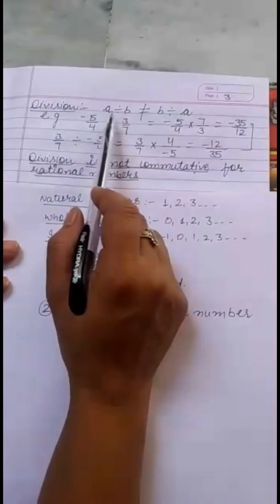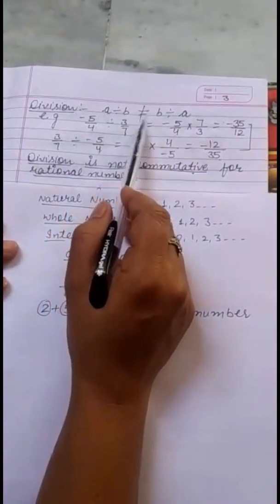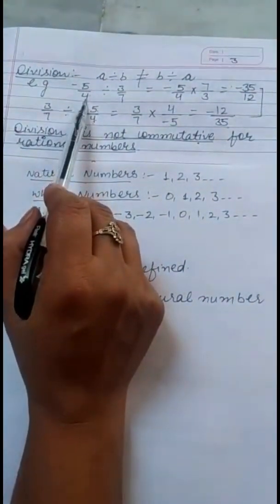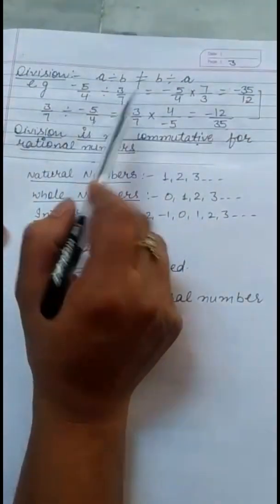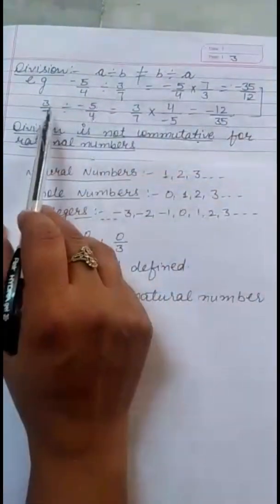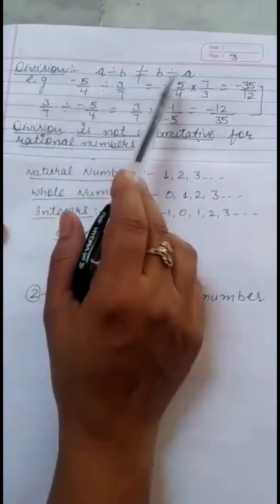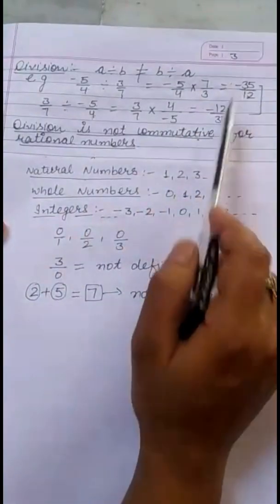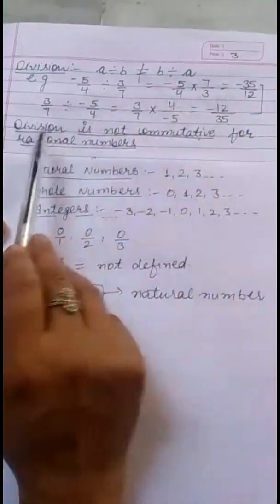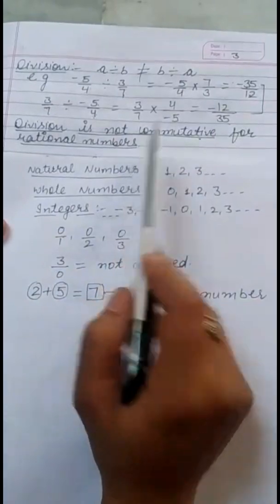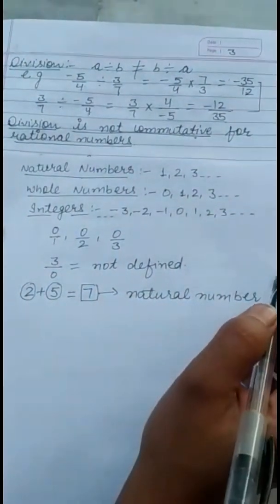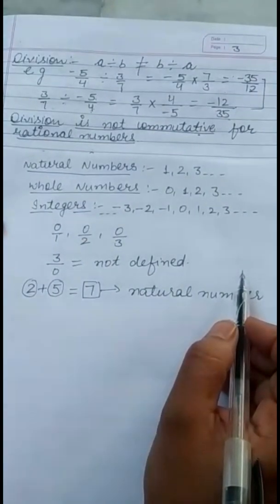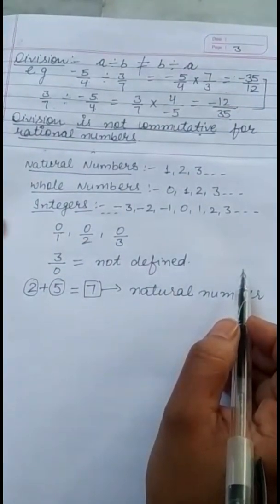For division: A divided by B is not equal to B divided by A. Taking minus 5 by 4 divided by 3 by 7, the answer is minus 35 by 12. Changing the order, 3 by 7 divided by minus 5 by 4 gives minus 12 by 35. So division is not commutative for rational numbers. Rational numbers hold commutative property for addition and multiplication but not for subtraction and division.